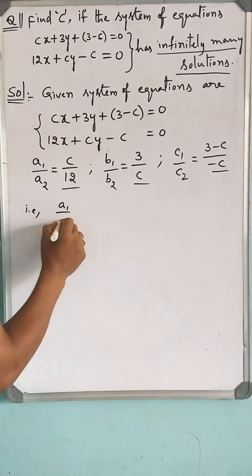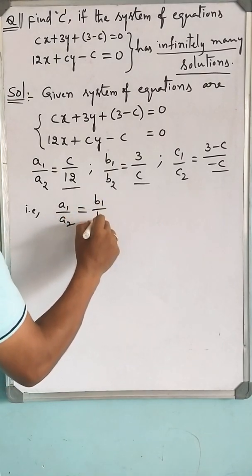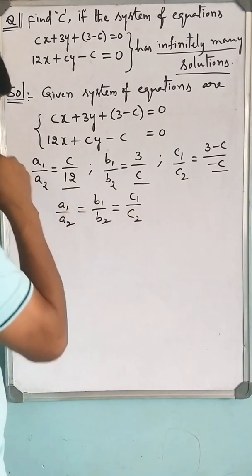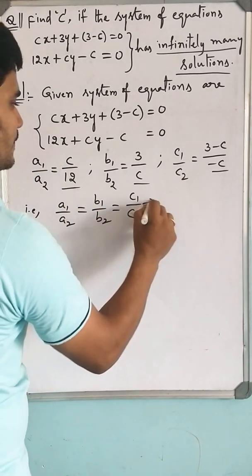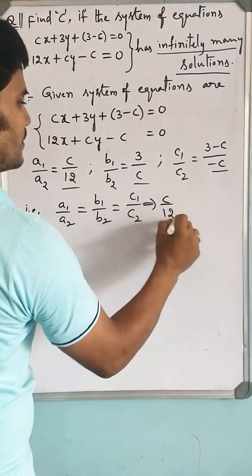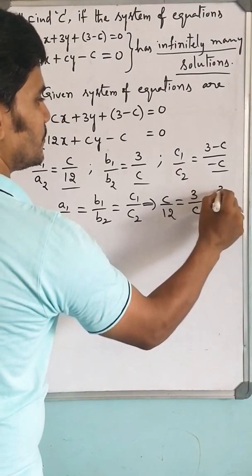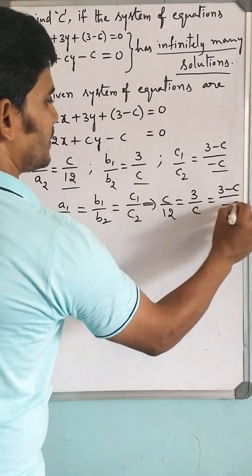A1 by A2 should be equal to B1 by B2 should be equal to C1 by C2, which means that C by 12 should be equal to 3 by C should be equal to 3 minus C by minus C.